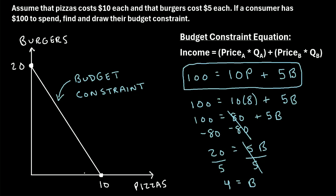We can add this point to our graph. If we buy 8 pizzas and draw a line up to our budget constraint, we can also buy 4 burgers. The place where these two lines intersect is exactly on our budget constraint line, which makes sense because buying 8 pizzas and 4 burgers comes to a total of $100 — our budget.